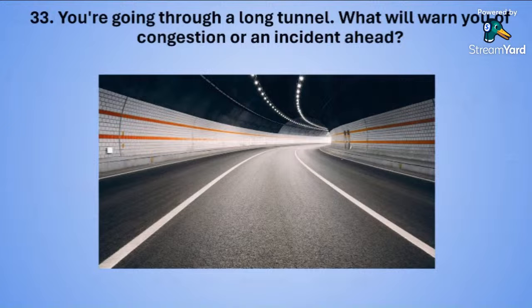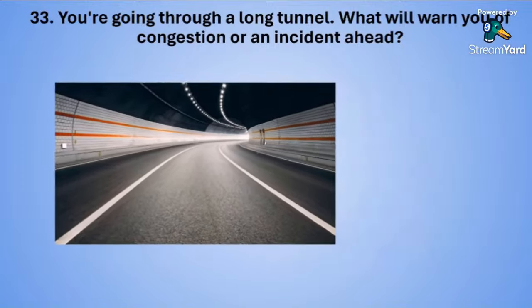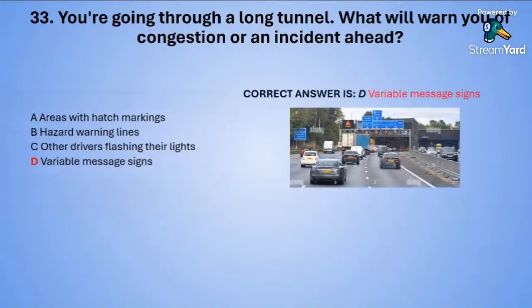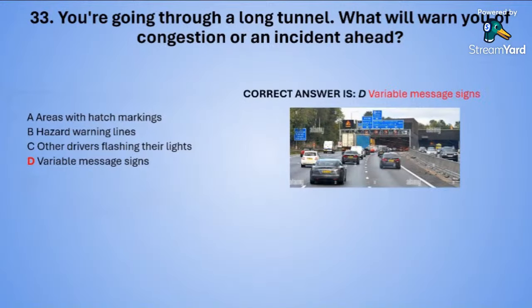Question thirty-three: You are going through a long tunnel. What will warn you of congestion or an incident ahead? A: areas with hatch markings. B: hazard warning lines. C: other drivers flashing their lights. Or D: variable message signs. The correct answer is D — variable message signs.